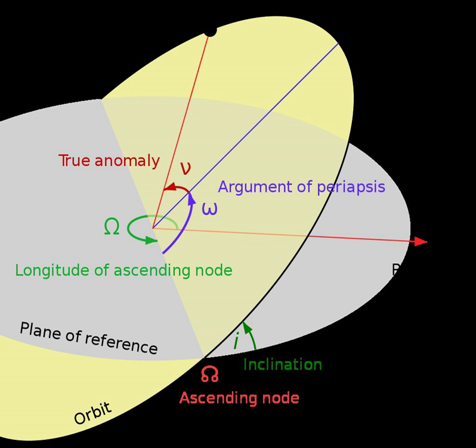In astrodynamics, the inclination i can be computed from the orbital momentum vector h, or any vector perpendicular to the orbital plane as i equals arccos of h_z over the magnitude of h.